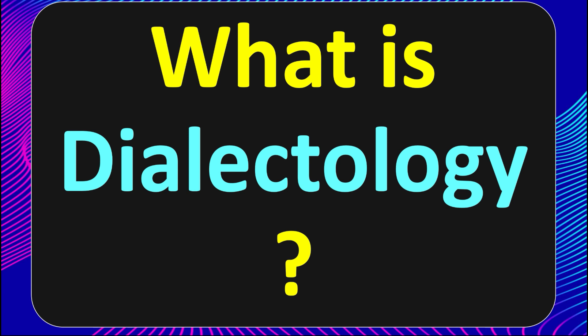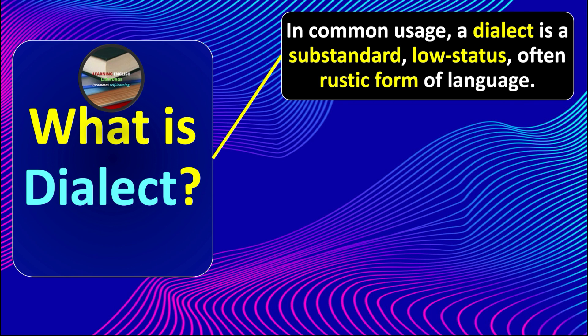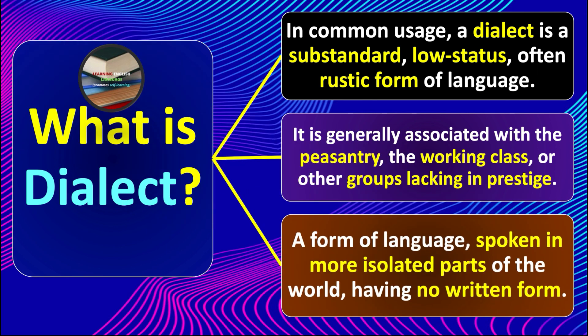Hello and welcome to a new topic: what is dialectology? But before we discuss that, let's first discuss what a dialect is. In common usage, a dialect is a substandard, low-status, often rustic form of language — spoken in the countryside, not very popular or prestigious. It is generally associated with the peasantry, the working class, or other groups lacking in prestige, respect, or esteem. A dialect is also a form of language spoken in more isolated parts of the world, having no written form.